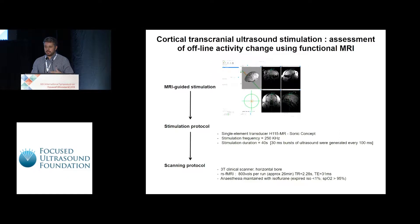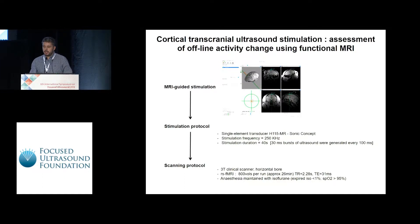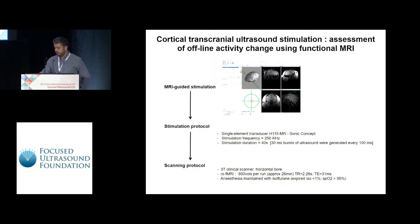After the animal has been stimulated, we take them to the scanner — a 3T clinical scanner — and then we start collecting runs of resting state fMRI. If the animal is anesthetized, the anesthesia is maintained using isoflurane, usually at less than 1%.